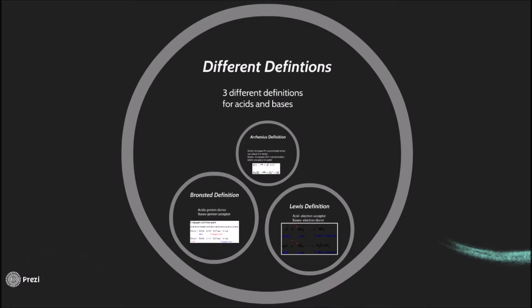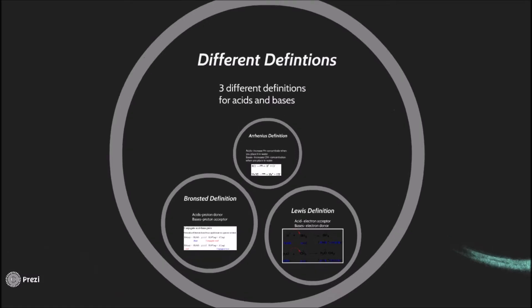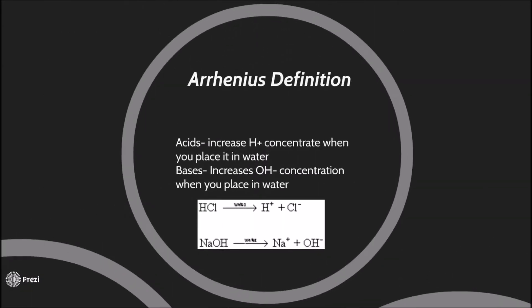Acids and bases all have different definitions. There are three types of different definitions for acids and bases. The first one is Arrhenius definition. Acids increase H plus concentrate when you place it in water. Bases increase OH negative concentration when you place it in water. As you can see in the picture below, HCl is reacting with water and then it becomes a hydrogen ion and then a chlorine ion. And then below that, NaOH reacts with water and it separates into Na ion or an OH ion.